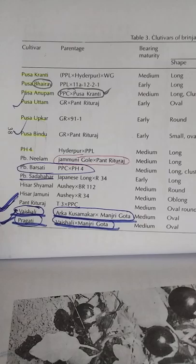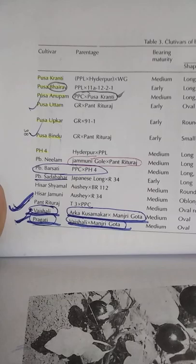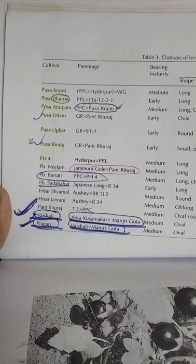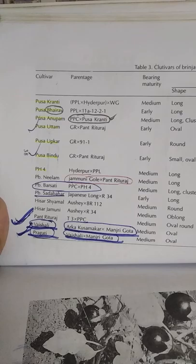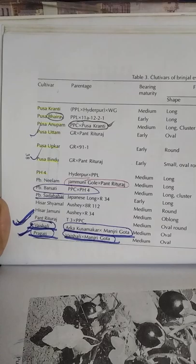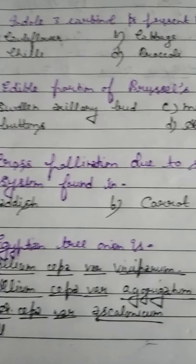Remember some important varieties of brinjal: Pusa Bherap, Pusa Kranti, Pusa Anupam, Pusa Uttam, Pusa Bindu, and Pragati. The most important ones to remember are Pusa Bherap, Pusa Uttam, Pusa Bindu, Vaishali, and Pragati. Hisar Jamuni is also important — focus on the ticked varieties before exams.